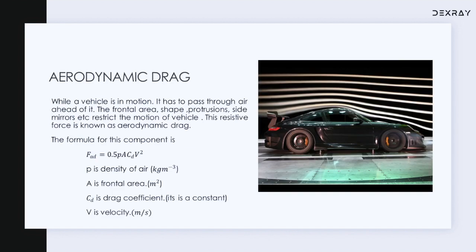One of the other main components of tractive force is aerodynamic drag. If we look at some high-speed vehicles — sports cars, sports bikes — we can see that the frontal area of these vehicles is minimized. This is because they travel at very high speeds and have to pass through the air ahead of them. There is a force which opposes the motion of the vehicle through the air, so velocity plays a major role in aerodynamic drag, and the frontal area also plays a major role.